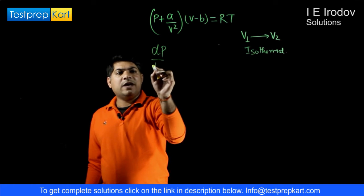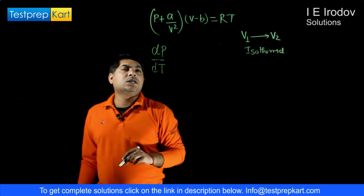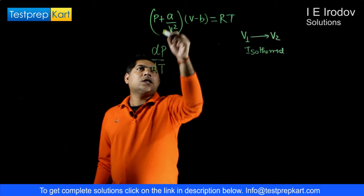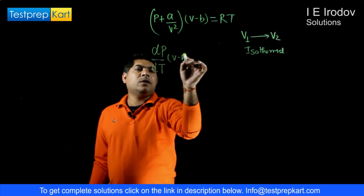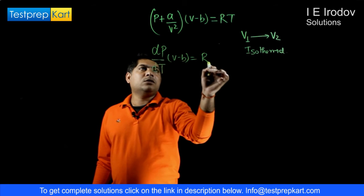So pressure must vary with respect to temperature. So this is dP/dT. This term is constant. So this is (V - b) = R.